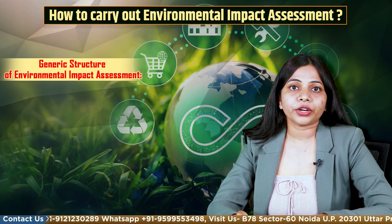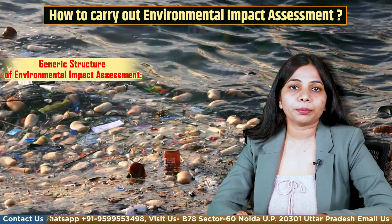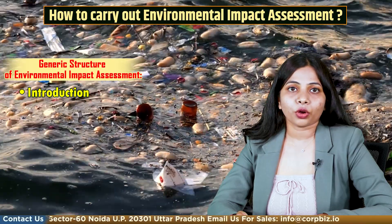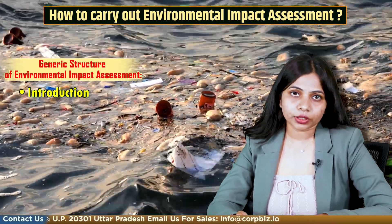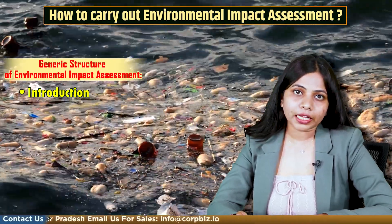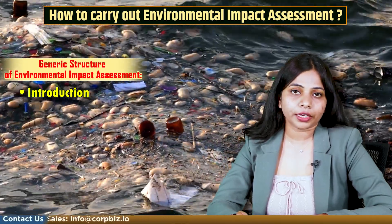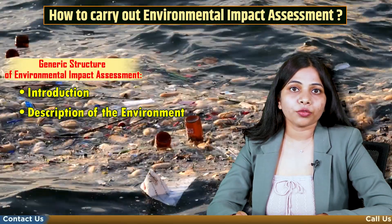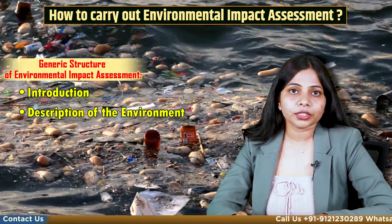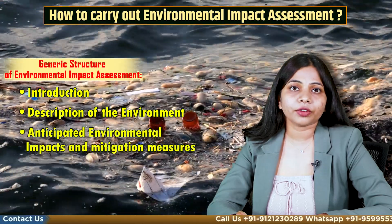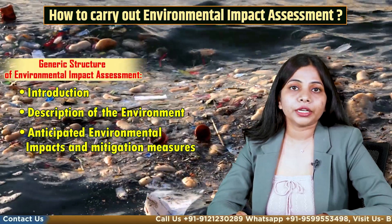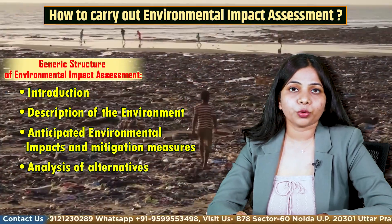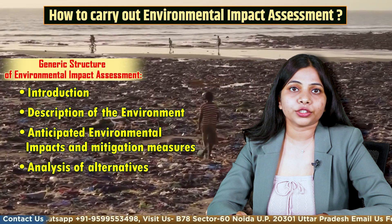Now we will have a look at the generic structure of the environmental impact assessment. First is introduction, which has all the details of the project. Second is project description, including details of risks likely to cause environmental effects. Third is description of the environment and establishment of baseline for valued environmental components. Fourth is anticipated environmental impacts and mitigation measures. Fifth is analysis of alternatives, including mitigation measures posed for each alternative and selection of alternative.